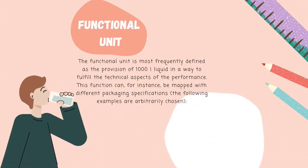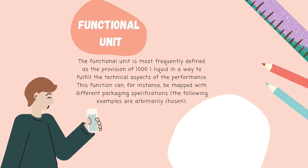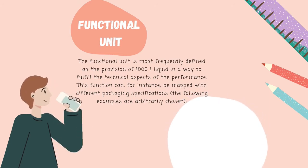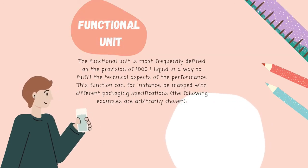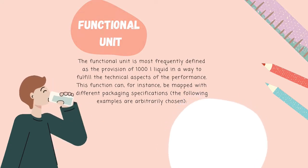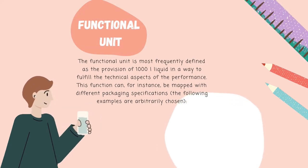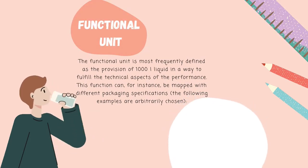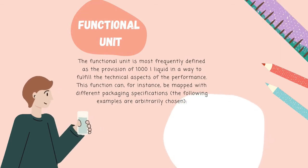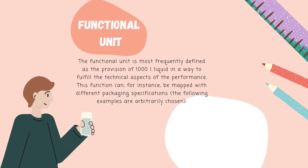The functional unit is most frequently defined as the provision of 1000 liters of liquid in a way that fulfills the technical aspects of the performance. This function can be mapped with different packaging specifications. The following examples are arbitrarily chosen.